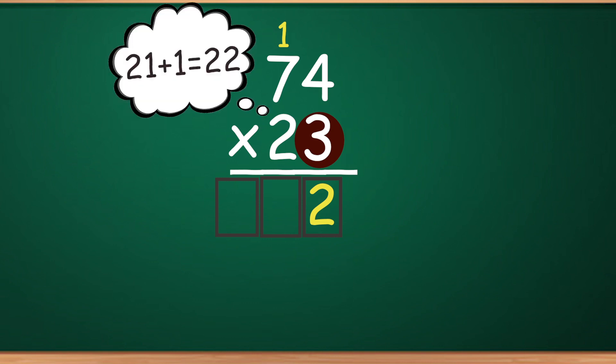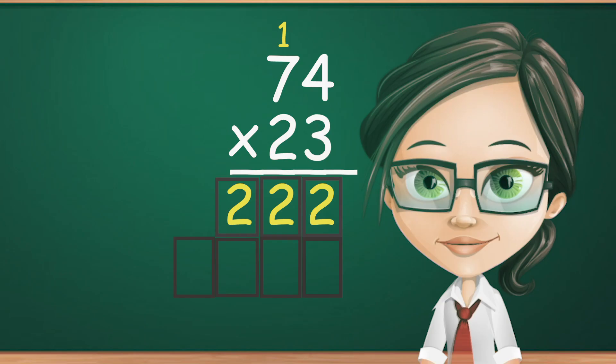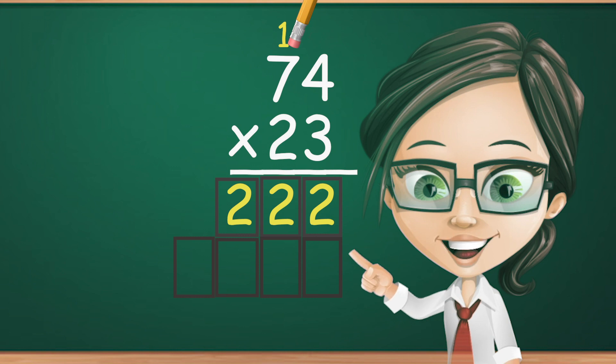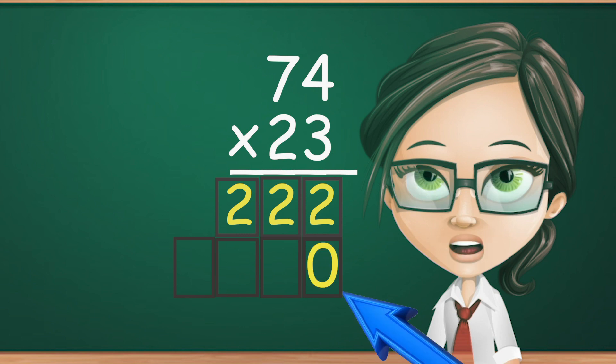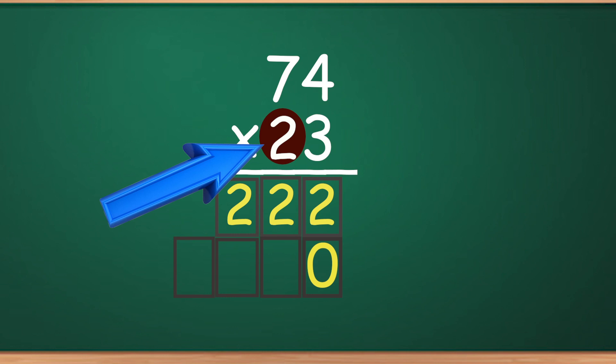Before you begin multiplying the tens place, you will need to do two things. First, get rid of the little number on the top since you already added that in. Next, add a zero under the ones place. This makes you move over to the tens place to begin multiplying. Now you can multiply the number in the tens place with the numbers on top.